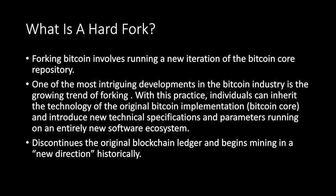So first — what is a hard fork? Forking Bitcoin involves running a new iteration of the Bitcoin Core repository. With this practice, individuals can inherit the technology of their original Bitcoin implementation and introduce new technical specifications and parameters running on an entirely new software ecosystem. We inherit the security mechanisms of the existing Bitcoin ledger, but essentially branch off and begin propagating new blocks and confirming transactions on a new chain. After the point of hard fork, it will not be compatible with the original and main Bitcoin network.